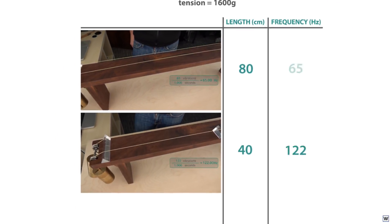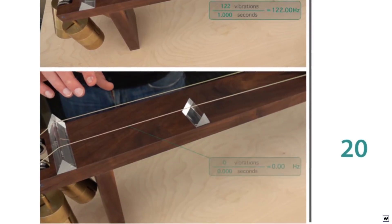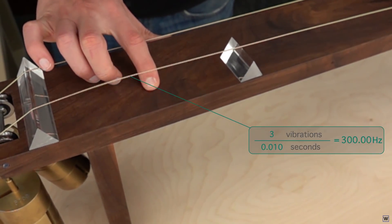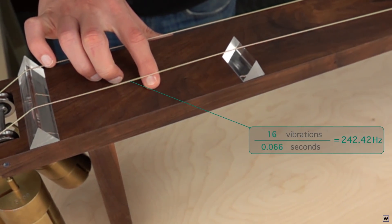Finally, if we halve our original length to 20 centimeters, our string vibrates more quickly, with a frequency of around 245 Hertz.